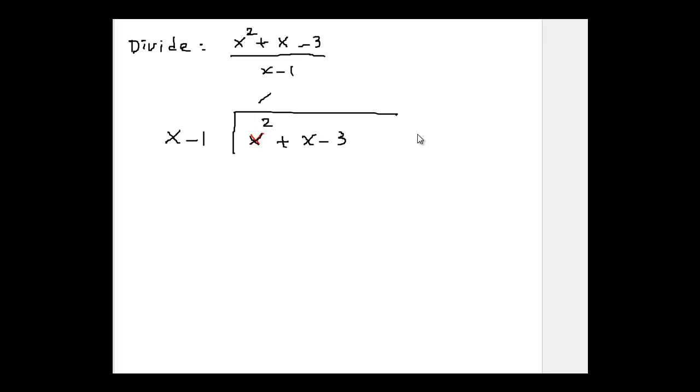Here we ask x times x minus 1 would be x squared minus x. To find the remainder, we have to subtract. So we change the subtraction to addition. Then we change the sign to the opposite sign. And then we simply add these two rows. So you get 0.